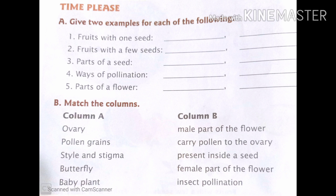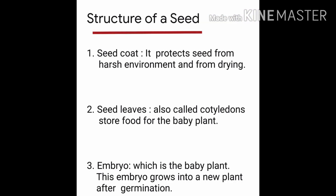Let us have a fast recap of what we learned today. We learned about the structure of a seed. First, we learned about seed coat, which protects the seed from harsh environment and from drying. Then we have seed leaves or cotyledons, which store food for the baby plant.